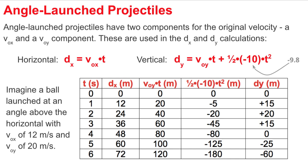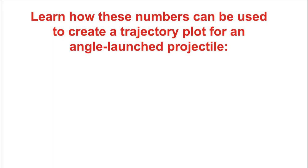So when we substitute the value of 20 for Voy and the value of negative 10 for AY, we end up getting these values for the first term, the second term, and the overall value of dy.